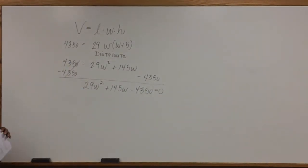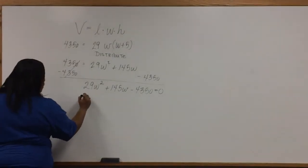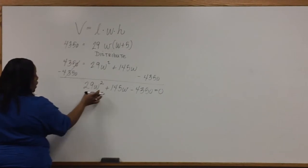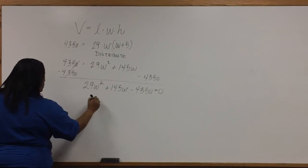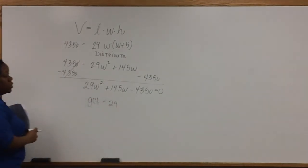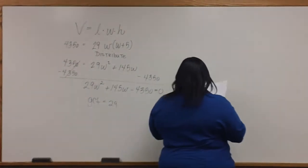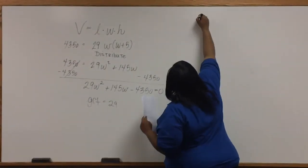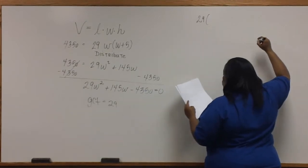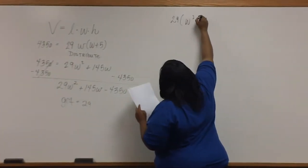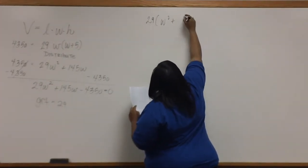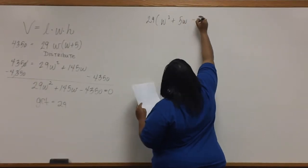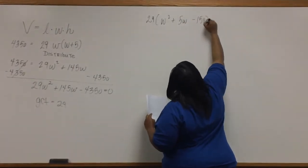Now the first thing we'll need to do is check for GCF. The GCF between 29, 145, and 4350 is 29. So we'll need to factor this out. After factoring out the 29, we have W squared plus 5W minus 150 equals zero.